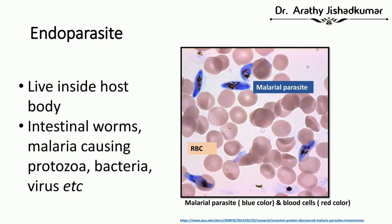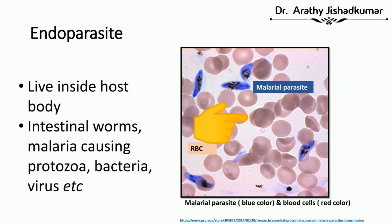Endoparasites live inside the host body. Examples include intestinal worms, malaria-causing protozoa, bacteria, virus, etc. In this picture, it's a blood sample drawn from a patient with malaria. The blue color represents the malarial parasite and the red color represents the red blood cells of the patient.